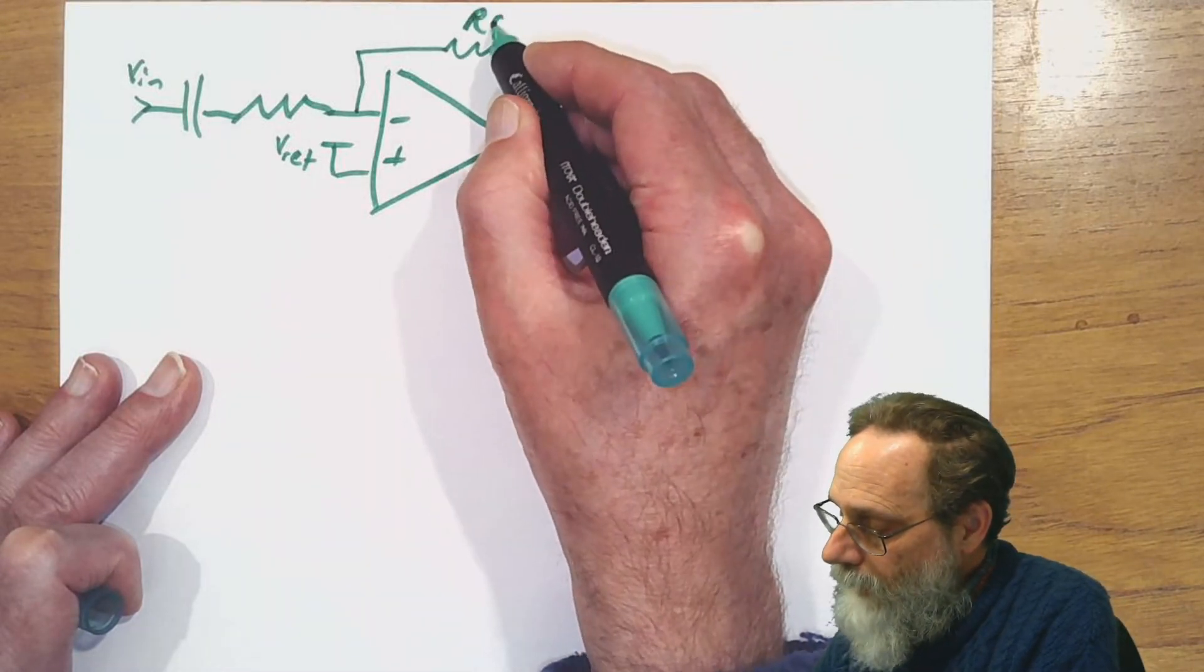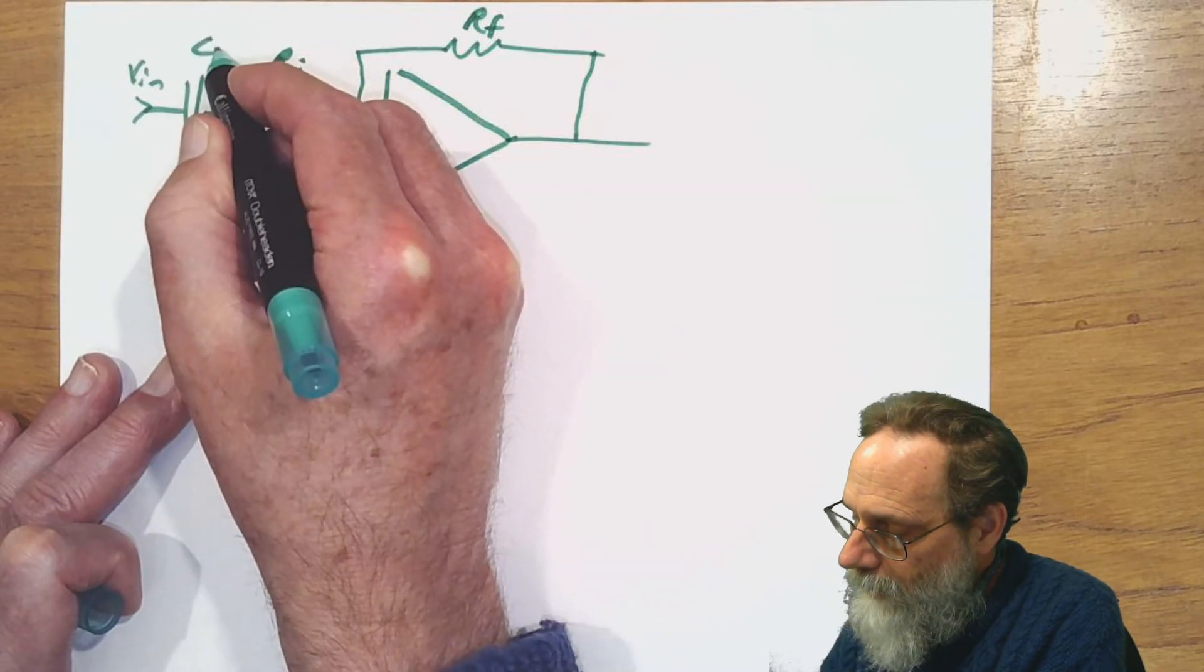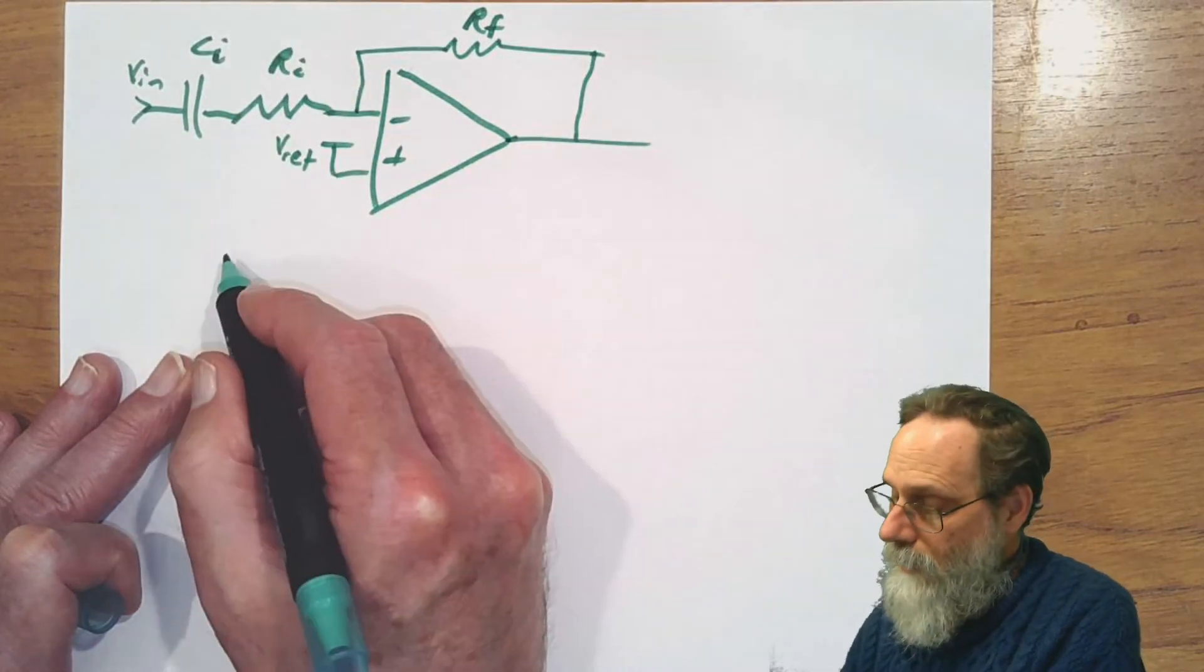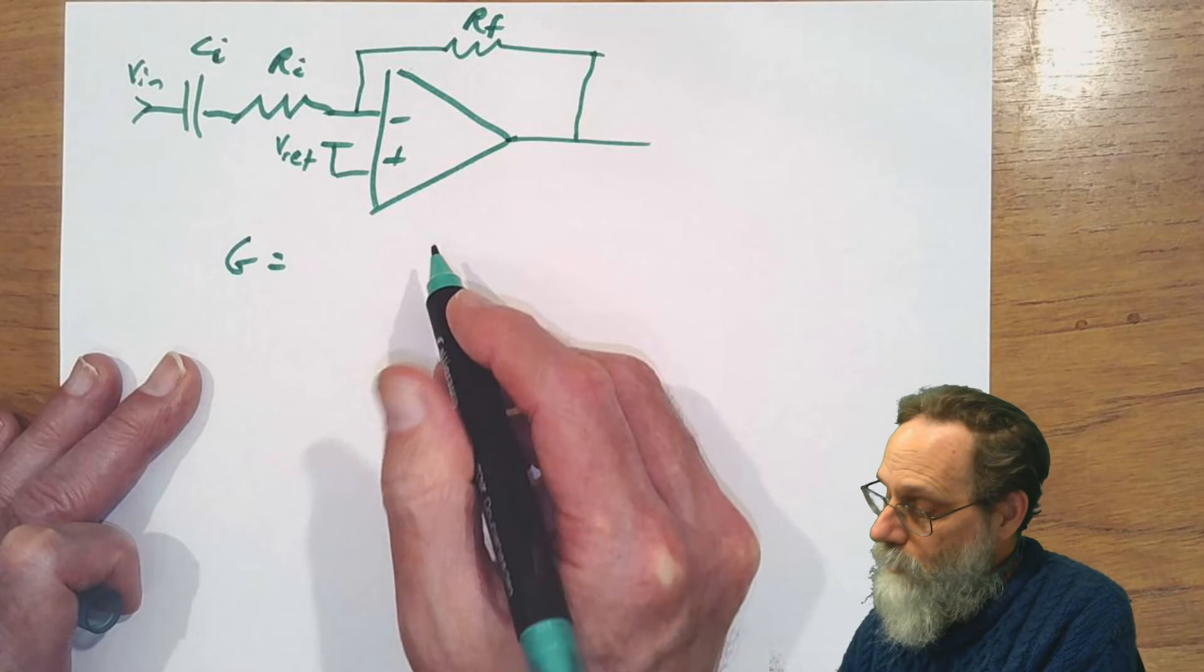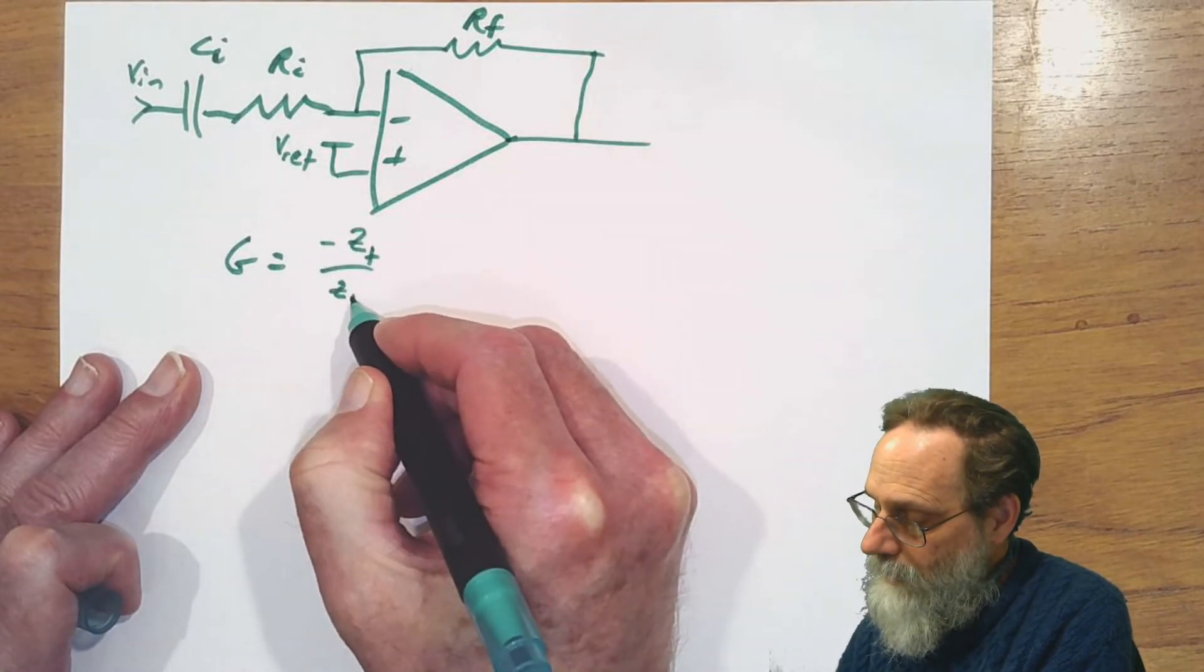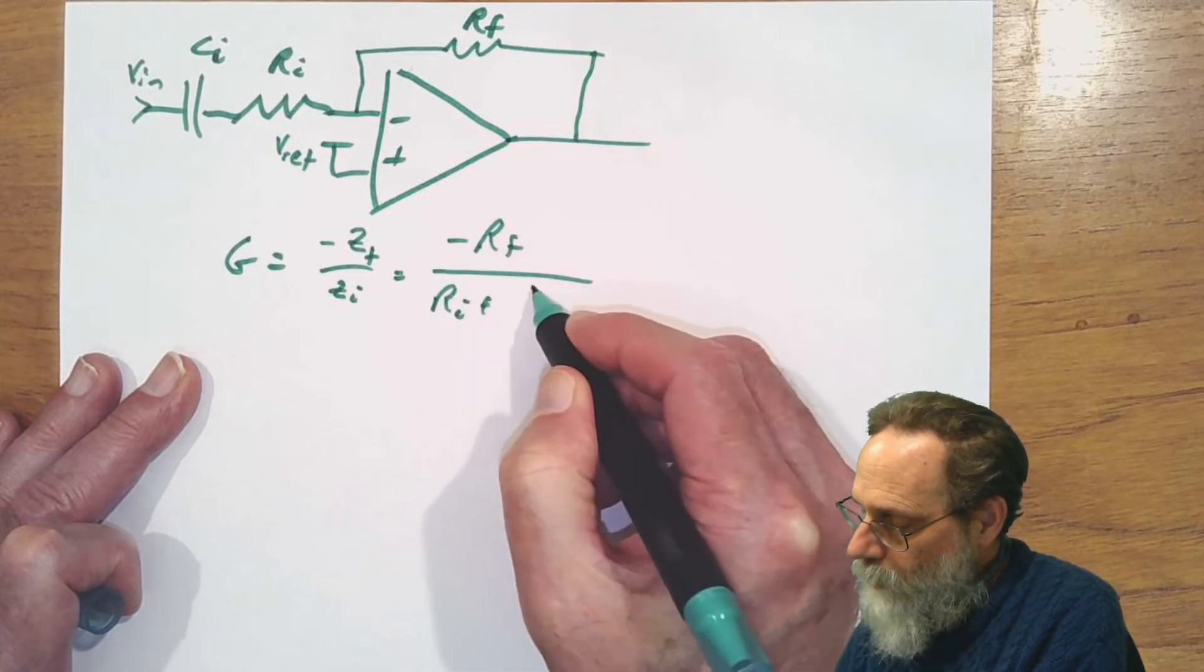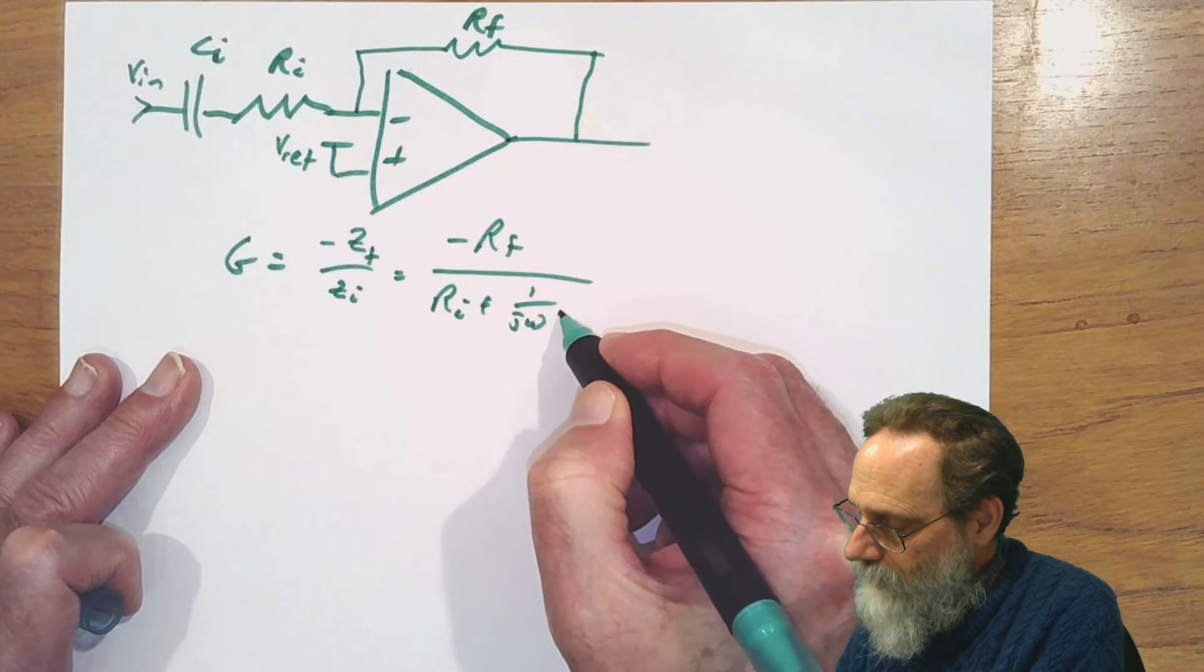So we have a feedback resistor, an input resistor, and an input capacitor. The gain is just going to be minus ZF over ZI, which is minus RF over RI plus one over J omega CI.